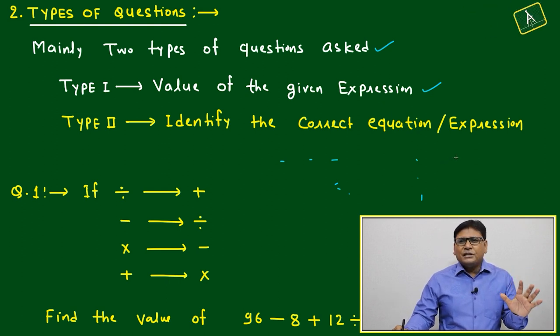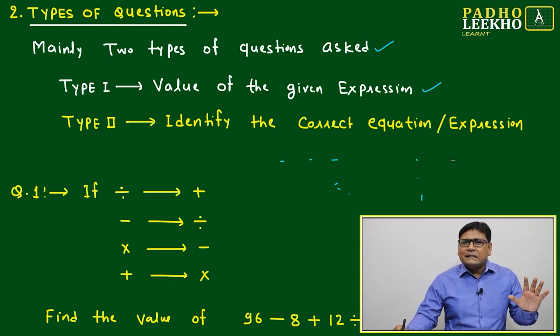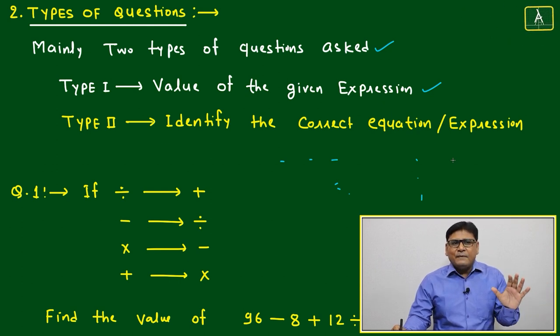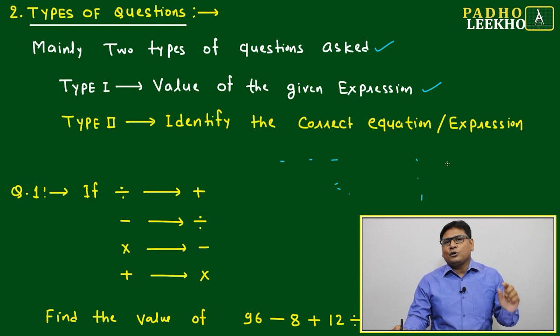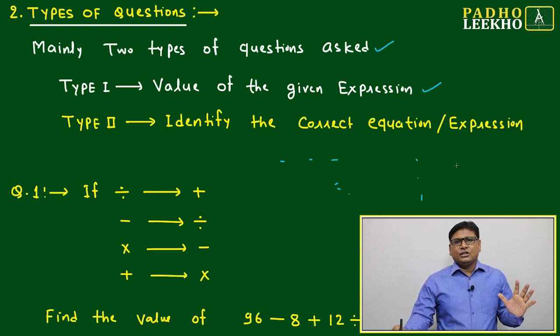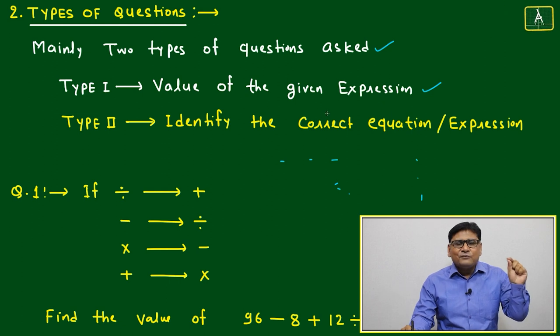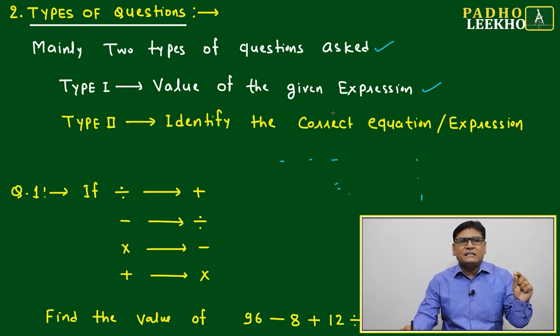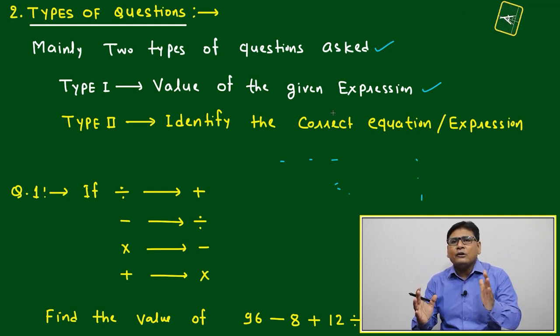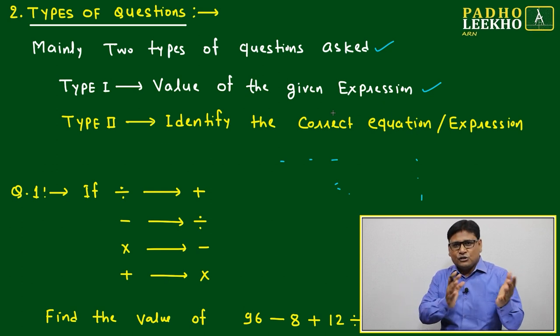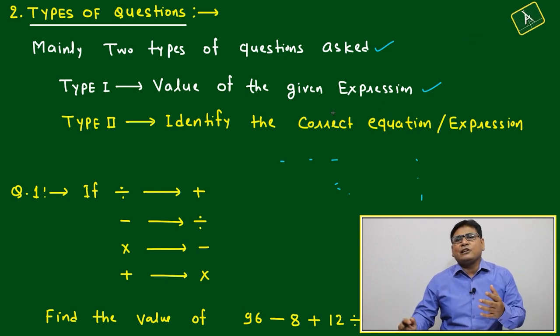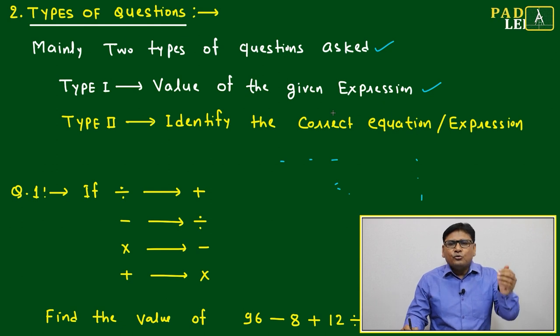This is also a typical question, but the difference with Type I is it will take a little more time, a few seconds extra. In Type I questions, you have to find the value of one given expression. It's easy to just put the given instructions and find the output.